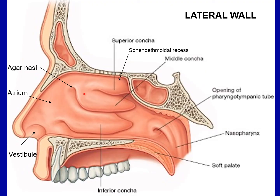The lateral wall of the nose is divided into three areas. The anterior part is a small depressed area known as the vestibule, lined by skin containing vibrissae, which are short stiff curved hairs. The middle part is known as the atrium of the middle meatus, limited above by a faint ridge of mucous membrane known as the agger nasae. The curved mucocutaneous junction between the atrium and the vestibule is called the limen nasae. The posterior part presents three small projections — the conchae or turbinates — and the small spaces separating them are called the meatuses.